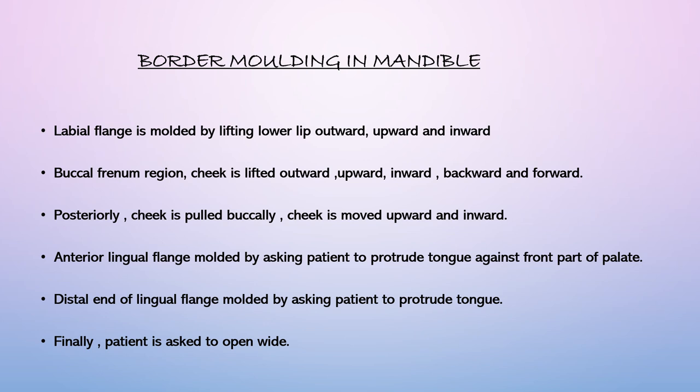When the tongue moves outward, the tongue muscles shape the green stick compound in the distal or anterior lingual flange, causing the material to take a reverse-S shape in the retromylohyoid curtain area. After lingual flange recording, the patient is asked to open the mouth wide to record the retromolar pad.